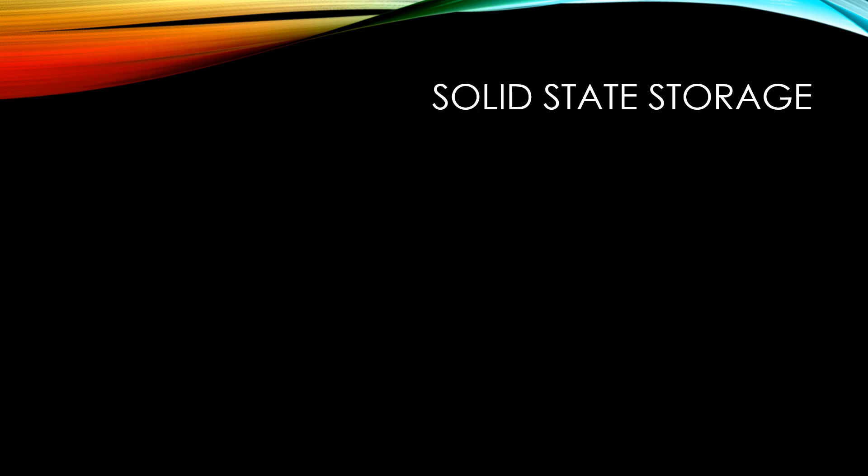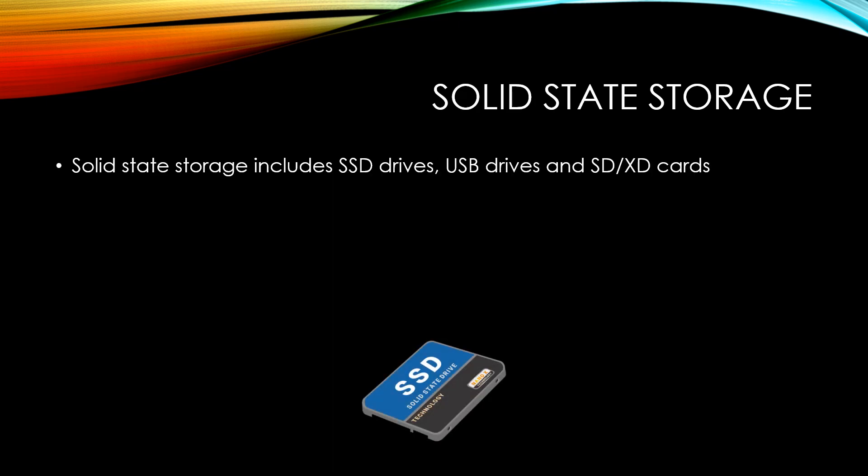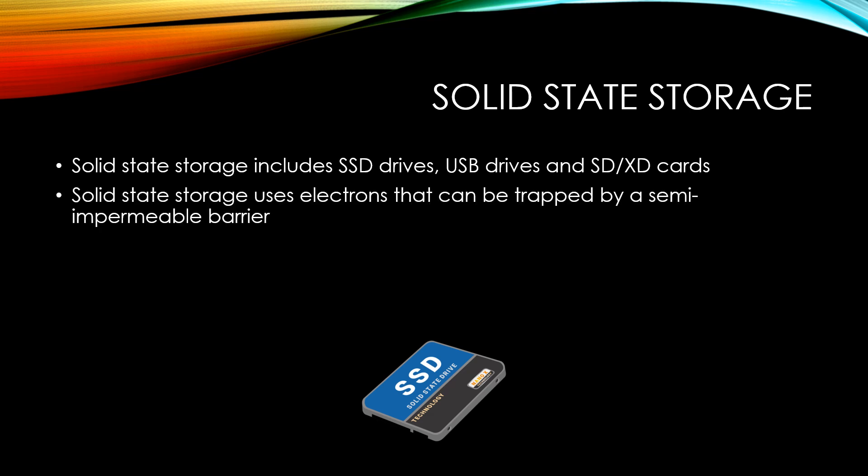Solid state storage includes SSD drives, USB drives, and SD or XD cards that you might find in a camera or a mobile phone. Solid state storage uses electrons that can be trapped by a semi-impermeable barrier. This can then be read back as zeros or ones depending on whether there is an electron trapped or not.